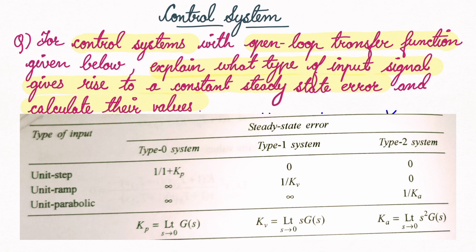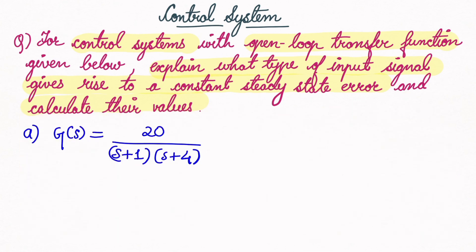Before going to the question, let us understand the table. For this open loop transfer function, we have to find the type of system by checking the number of poles at the origin. Here there is no 's' term sitting alone, so this is a Type 0 system. The question is: for Type 0, which constants are zero or infinite, and which do we need to find?